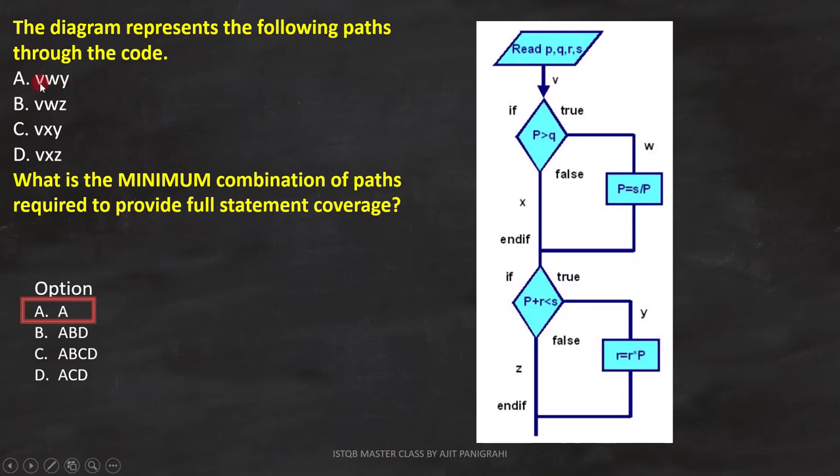Now we have to find V, W, and Y on the flowchart. This is the path on flowchart. With this path, we can cover all the statements. These are the three statements in the graph and all are covered with this combination.